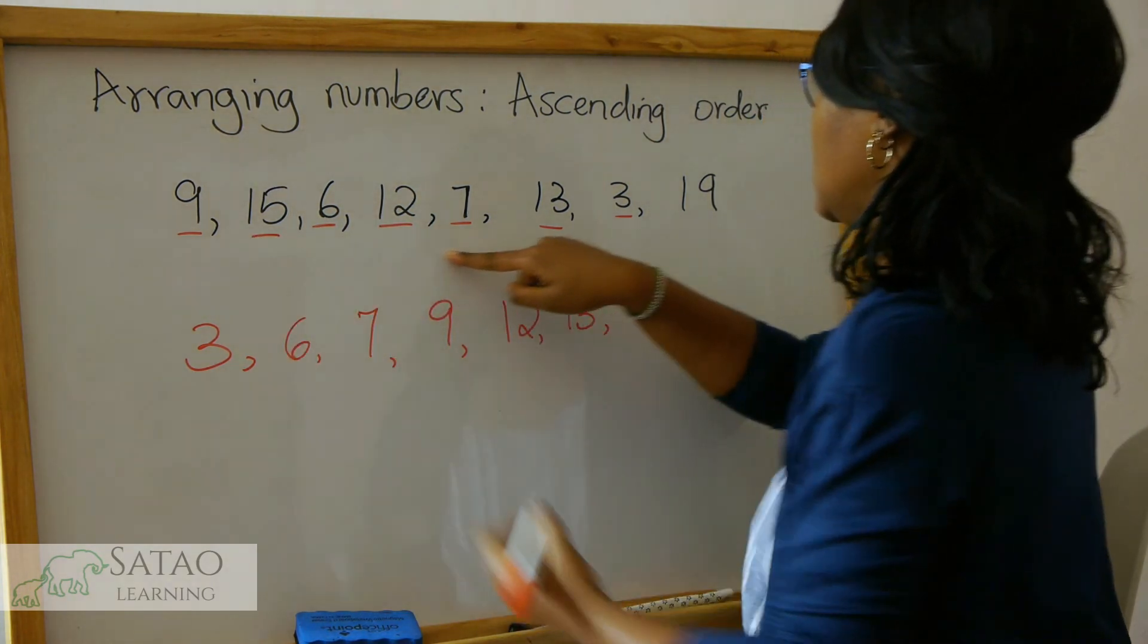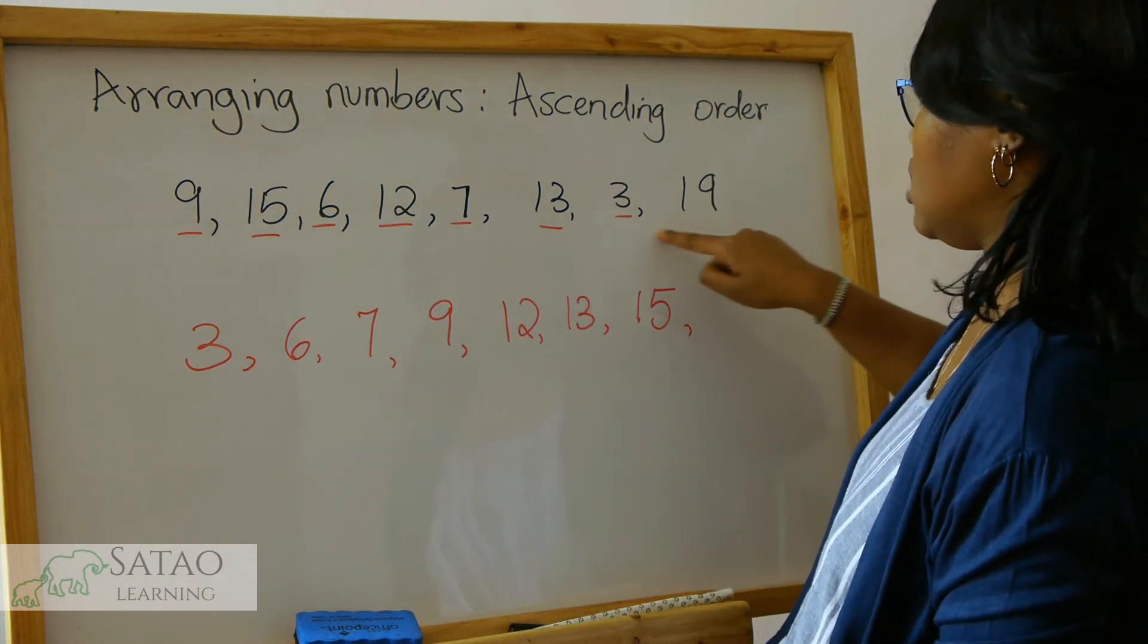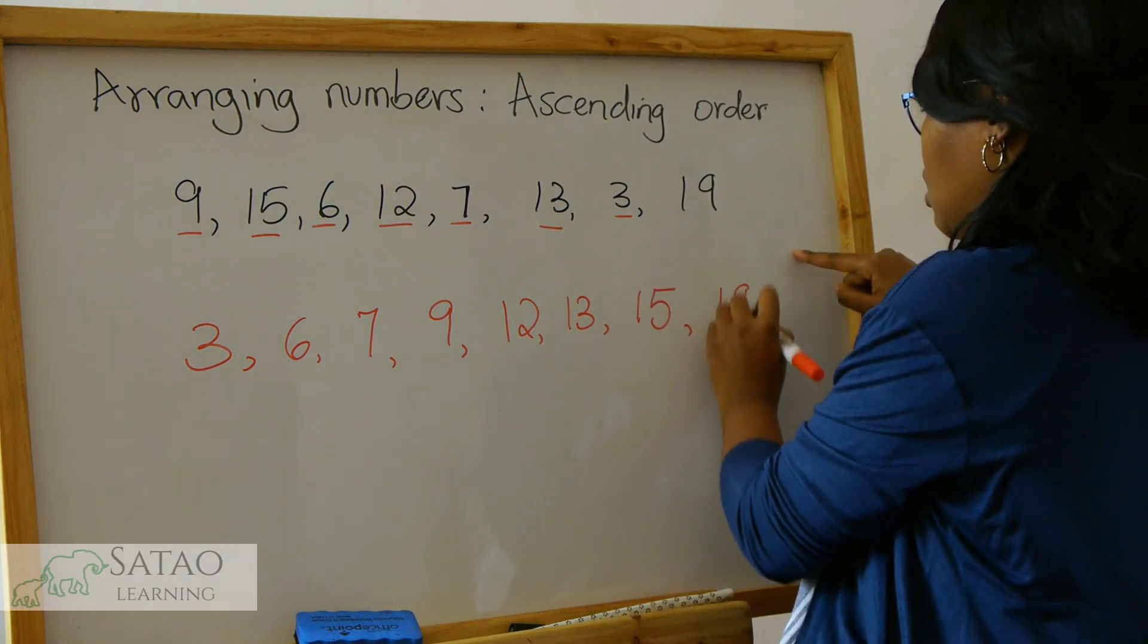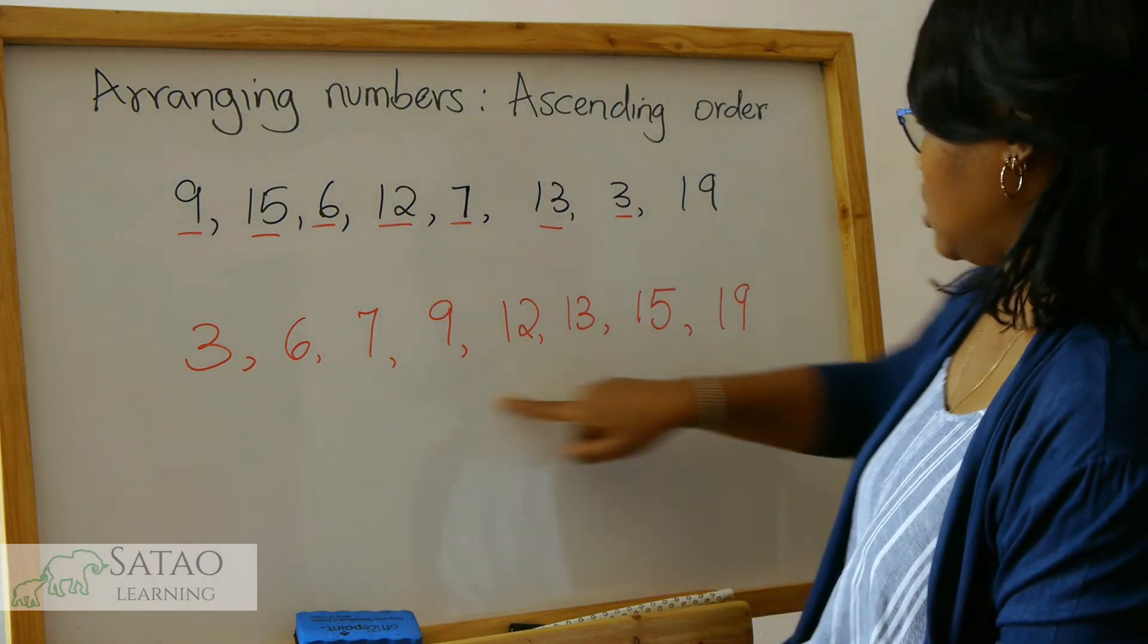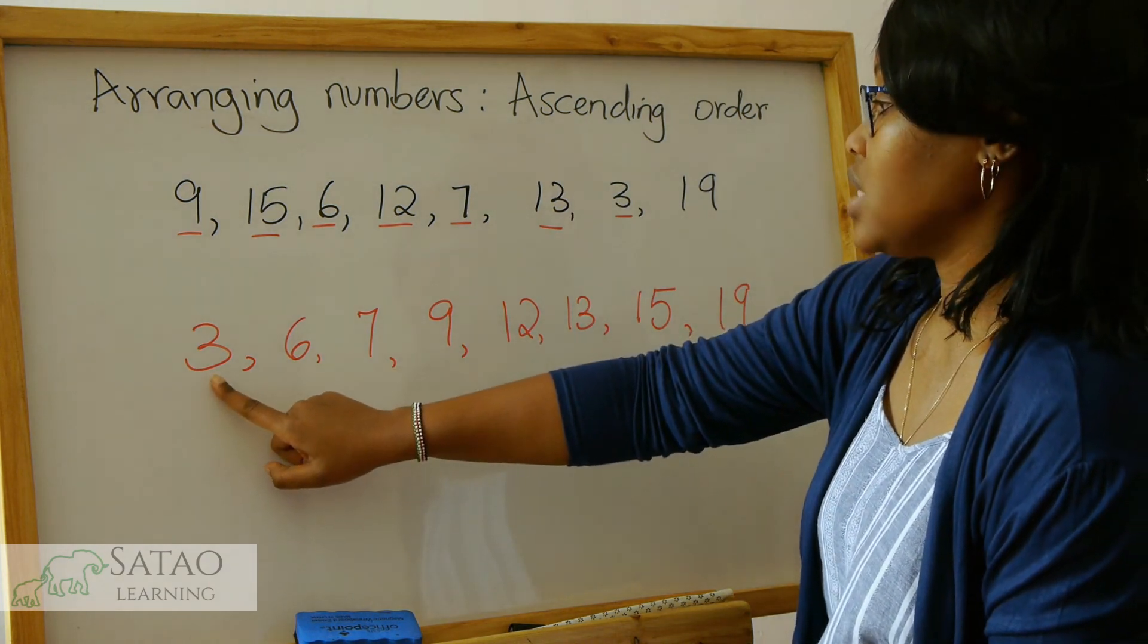16, 17, 18, and we are left with 19. So when we look at these numbers we can see 3 is the smallest.